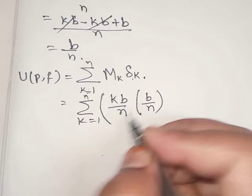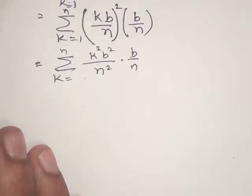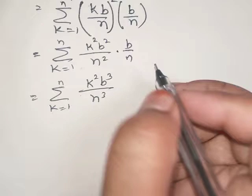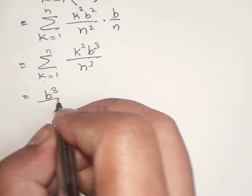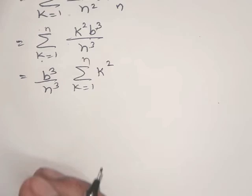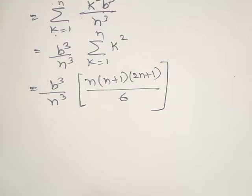Since in the question f(x) = x², we take the square: U(P, f) = summation k=1 to n of (kb/n)²·(b/n) = summation k=1 to n of k²b²/n² · b/n = summation k=1 to n of k²b³/n³. Since b³/n³ is constant, this becomes b³/n³ · summation k=1 to n of k². Applying the formula Σk² = n(n+1)(2n+1)/6, we get b³/n³ · n(n+1)(2n+1)/6.